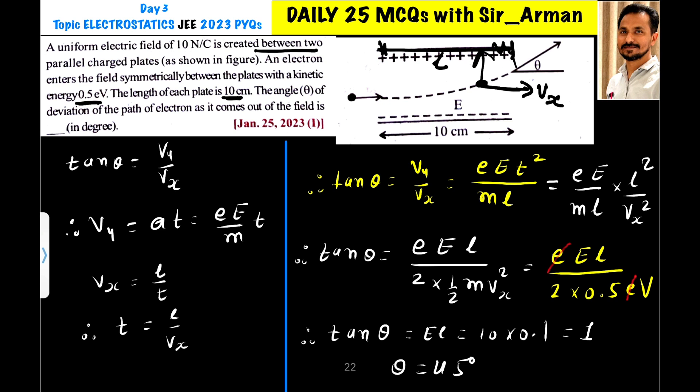Now to convert this value into joule I need to put the value of this electron charge. And if I put that value then this value and this value will get cancelled. So this term will be in joule. So here 2 into 0.1 is 0.5, 2 into 0.5 is 1. So we are remaining with tan theta equals only E into l.